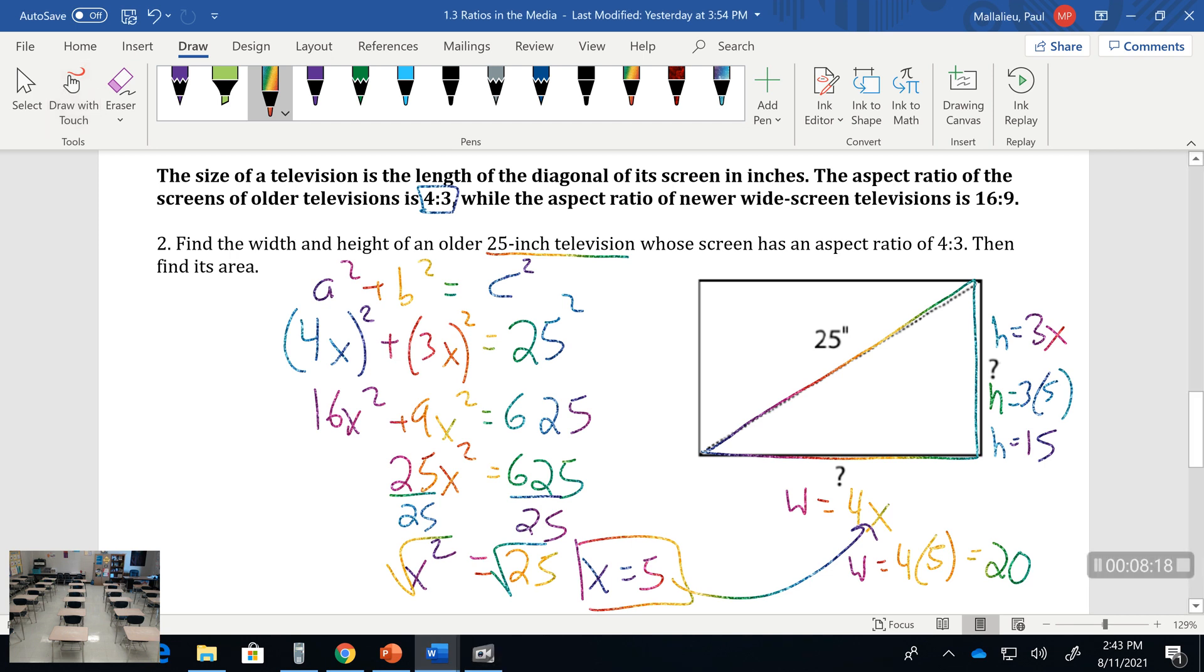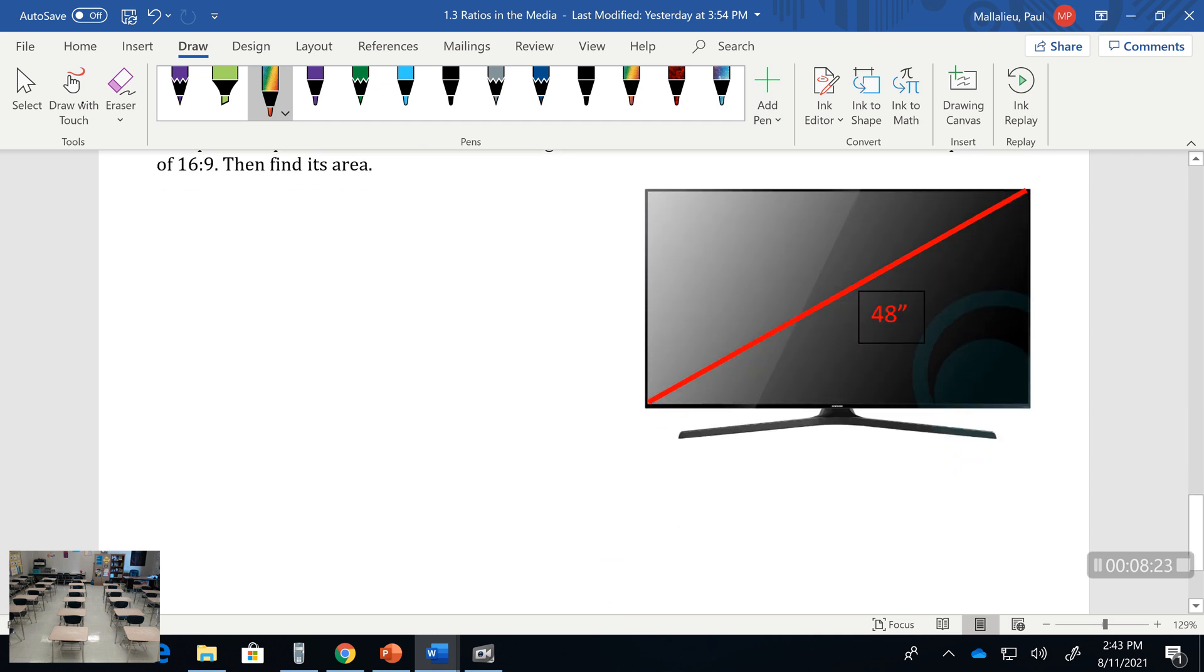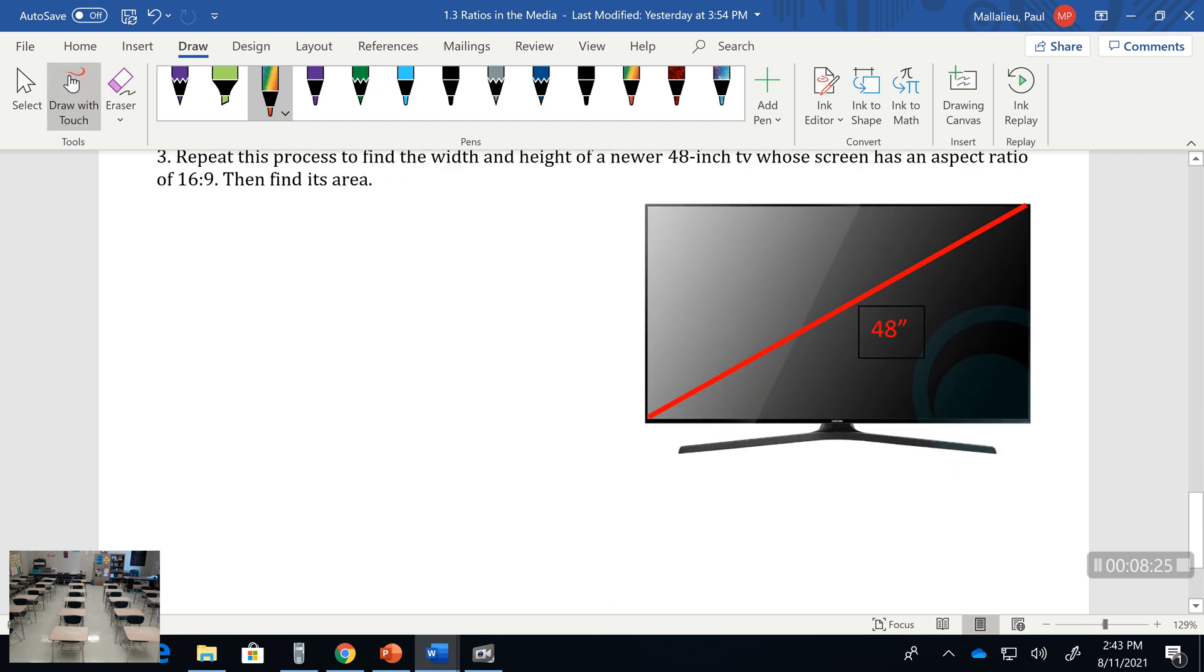With our new TV we have an aspect ratio of 16 to 9. We see that we have a 48 inch TV, looks a little more modern, looks like something that you would see more often. We've got this triangle, so we know we still have a² plus b² equals c².